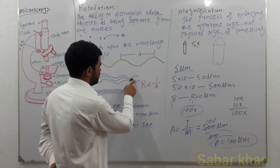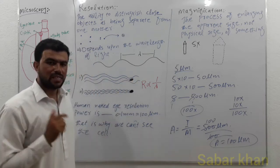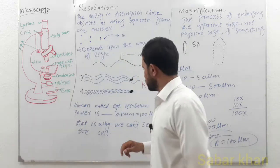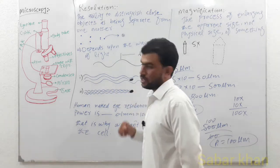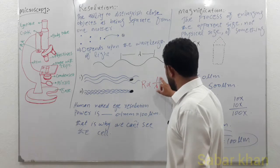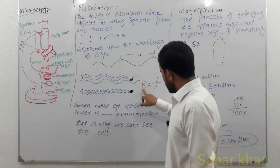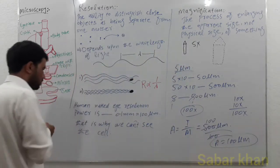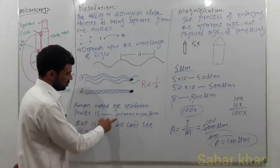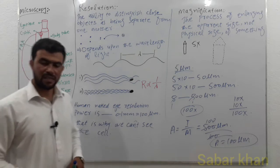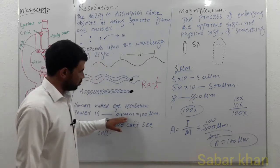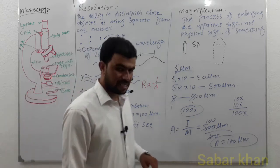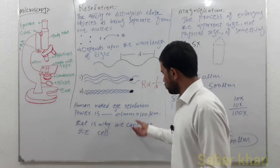The object is struck by only a single wave in case one, but in case two, using waves of a shorter wavelength, the object is struck by three waves. This means resolution is inversely proportional to wavelength: larger wavelength means smaller resolution, and smaller wavelength means greater resolution. The human naked eye resolution power is 0.1 millimeter or 100 micrometers — that is why we can't see the cell, because the cell size is much less than the resolution power of our eye.